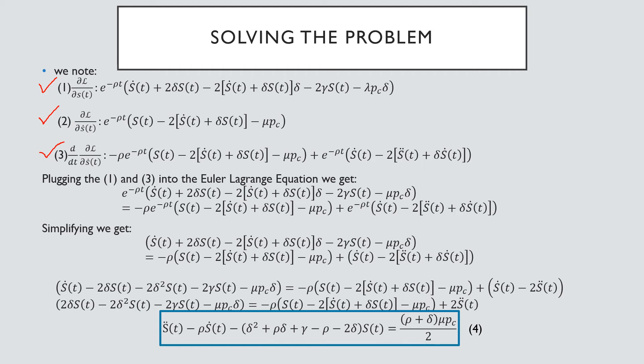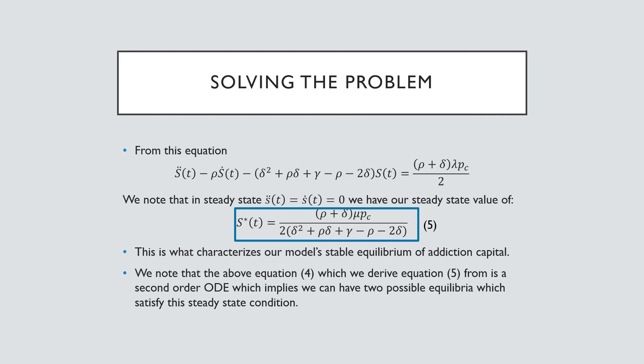Now from this equation, our derivatives of our addiction capital with respect to time is going to be equal to zero, that being both the first and the second one. If we rearrange that, we get our steady state value characterized by equation number five. This is what characterizes our model's equilibrium of addiction capital. We note that the above equation, equation four, is a second order ODE which implies that we can have two possible equilibria which satisfy the steady state condition.